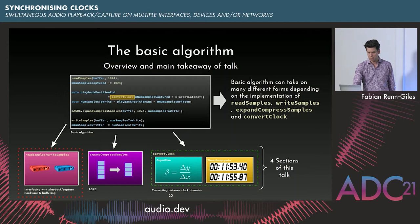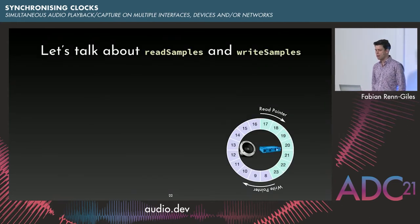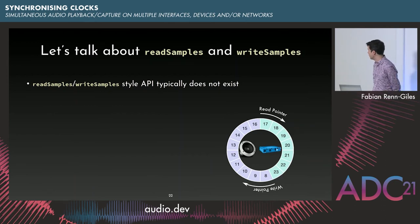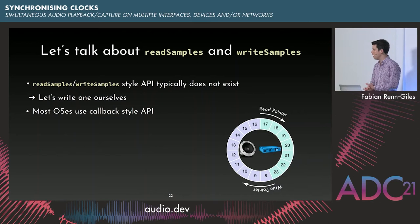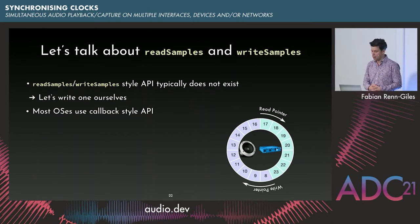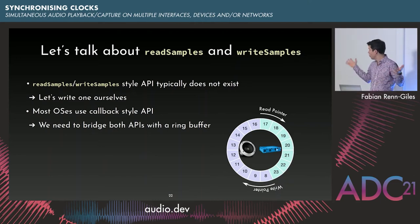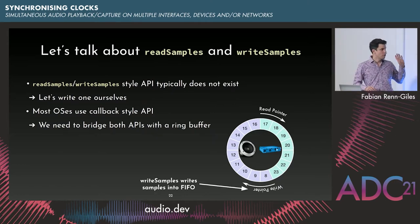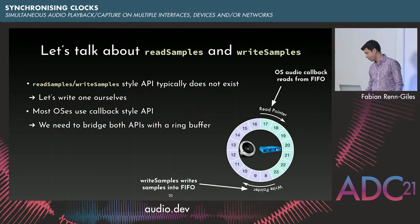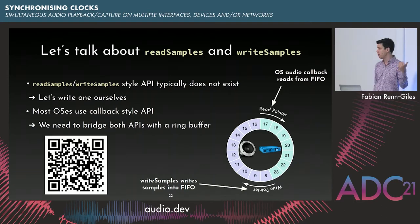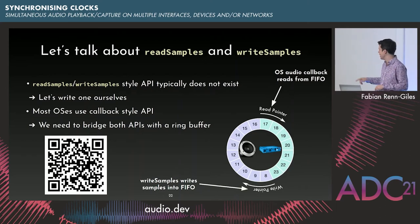Let me talk about read samples and write samples first. Typically you don't have a read/write samples style API in your operating system — what you have is a callback-style API where, in the playback case, the OS gives you an audio callback in which you fill a buffer with playback samples. So we need to bridge these two API styles with a ring buffer (sometimes called a FIFO). In the playback case, the write samples function pushes samples into the ring buffer, and every time the OS gets a playback audio callback, it pulls samples from that ring buffer.